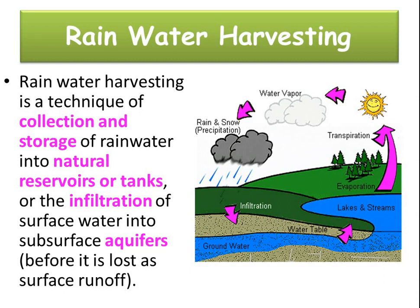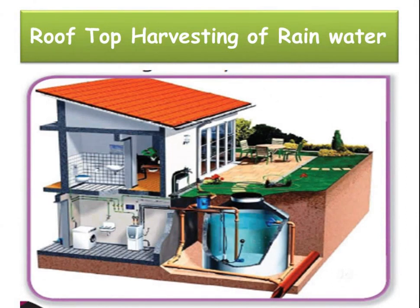Before it is lost as surface runoff — a runoff occurs when there is more water than the land can absorb, and the excess water flows across the surface into creeks, streams or ponds — the water we get from rain is collected and stored into natural reservoirs like lakes, rivers, ponds, wells or constructed tanks, and infiltrated into subsurface aquifers. The picture shows rooftop harvesting of rainwater, where the water is collected and reused in toilets, gardens and other utilities.